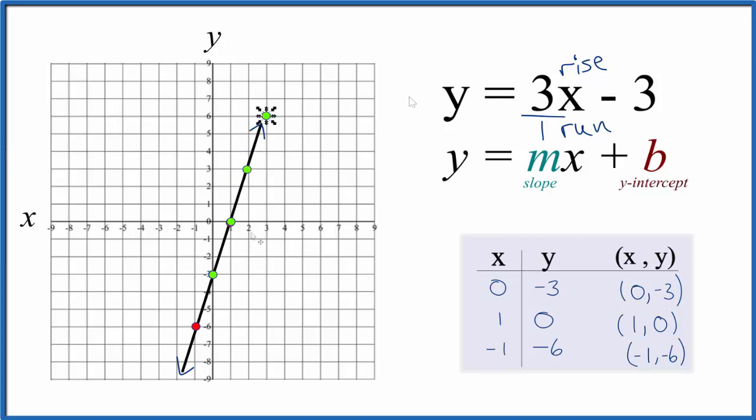We can just keep doing this: 1, 2, 3 and run over 1, rise 3, 1, 2, 3 and run over 1. The points fall on our line here. We could also go in the opposite direction: go down 3, 1, 2, 3, then over to the left. Down 3 and over to the left, and those points also fall on our line.